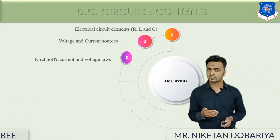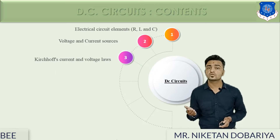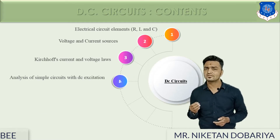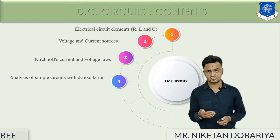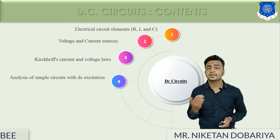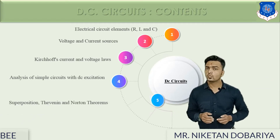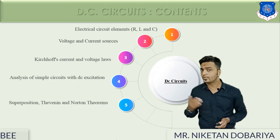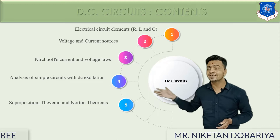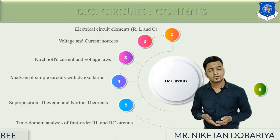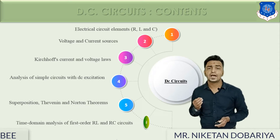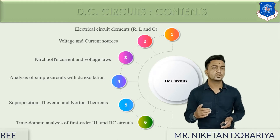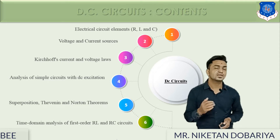Next, we will discuss various laws like Kirchhoff's voltage law, Kirchhoff's current law, as well as Ohm's law. Then we will discuss and analyze various DC circuits like series circuits, parallel circuits, and circuits based on star and delta connections. We will also discuss various theorems — the superposition theorem, Thevenin theorem, and Norton theorem. Finally, we will discuss time domain analysis of first-order RL and RC series circuits, which is essentially the charging and discharging of inductors and capacitors.